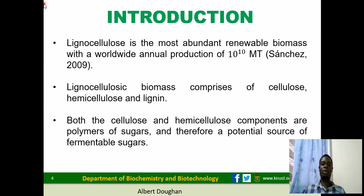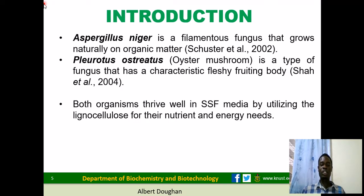YAM peels contain high amounts of lignocellulose materials such as cellulose, hemicellulose, and lignin. Lignocellulose is the most abundant raw material with a worldwide annual production of about 10 to the power of 10 metric tons. The cellulose and hemicellulose are sources of sugars and can be fermented to produce glucose. Aspergillus niger is a filamentous fungus that grows very well on organic matter. Pleurotus, commonly known as oyster mushroom, is a type of fungi eaten by human beings. Both fungi can grow well on solid state fermentation media and can be used in the production of simple sugars.